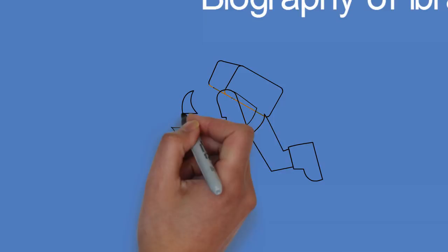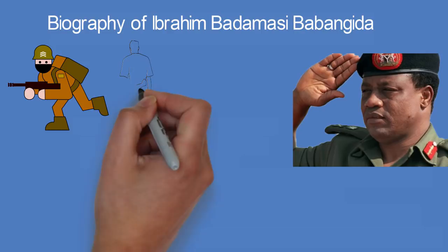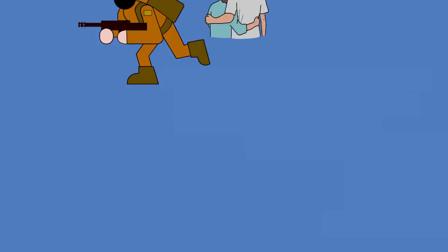Babangida was involved in most of the military coups in Nigeria which took place during these periods: July 1966, February 1976, December 1983, August 1985, December 1985, and April 1990.